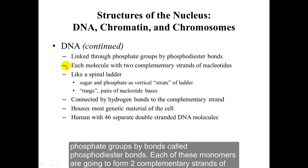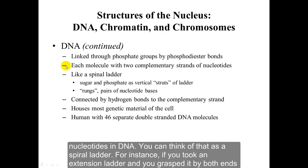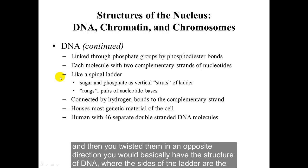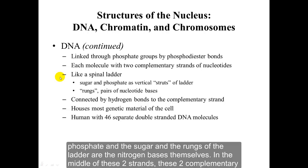Each of these monomers forms two complementary strands of nucleotides in DNA. You can think of it as a spiral ladder — if you took an extension ladder and grabbed it by both ends and twisted them in opposite directions, you would basically have the structure of DNA, where the sides of the ladder are the phosphate and the sugar, and the rungs of the ladder are the nitrogen bases.